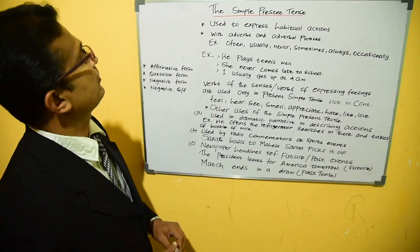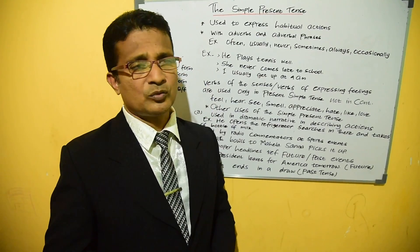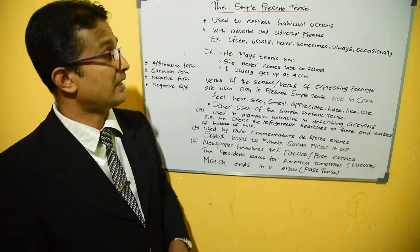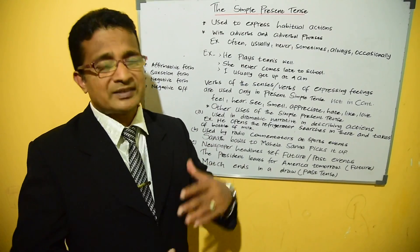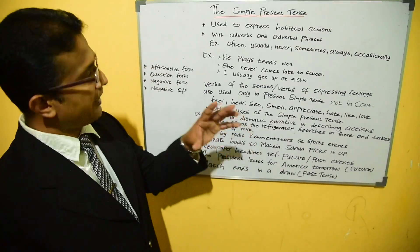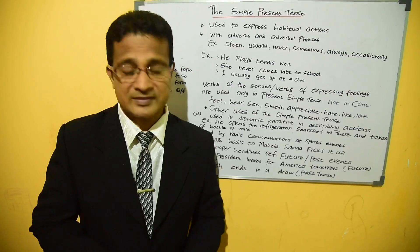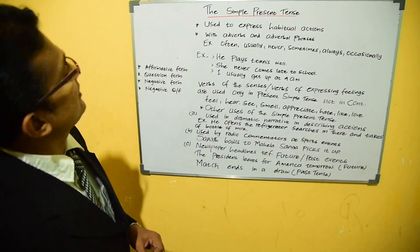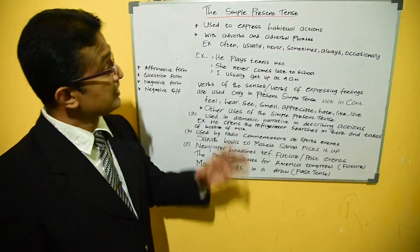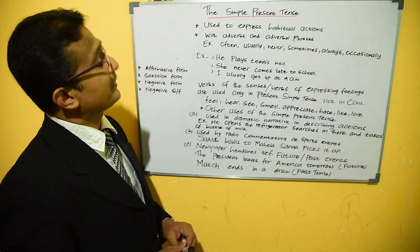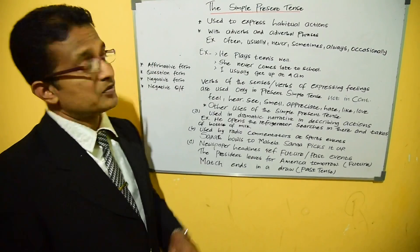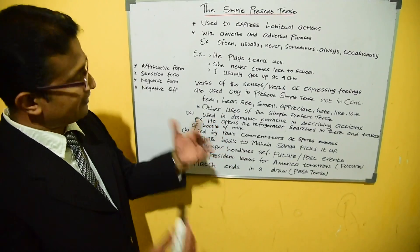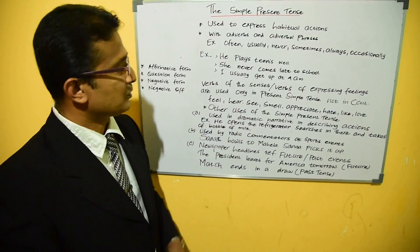Number one - used to express habitual actions. What do you understand about habitual actions? It comes from the noun 'habit' and becomes the adjective 'habitual'. Whatever things we do as a practice or as a habit should all be used under the simple present tense. When we use them, adverbs and adverbial phrases are also required, especially in present simple tense. That is one signal to understand whether the present simple tense is used in a sentence.